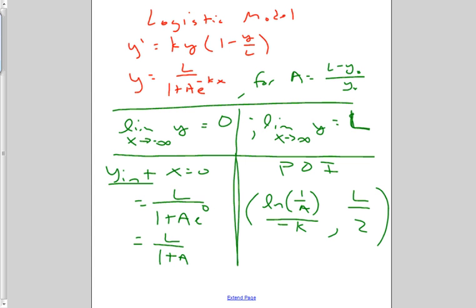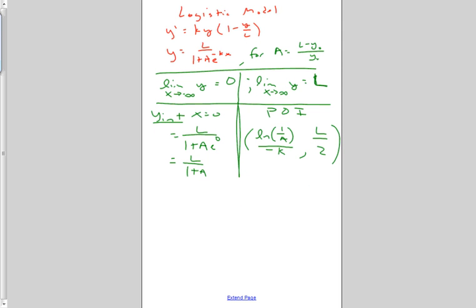Just to get a picture of what our logistic model looks like. We're going to have an asymptote of y equals 0, an asymptote of y equals L, and we're going to go through...